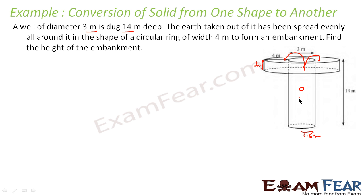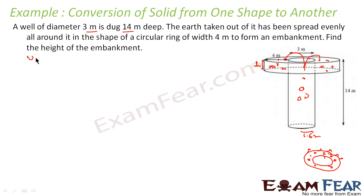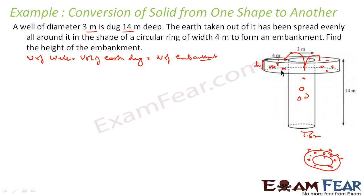We are taking the mud from the well and the mud is used to fill this surrounding area — the embankment. If you see the top view, it will be in this fashion: the surrounding ring area is where we are putting the mud, and this height will rise. We are asked to find the height of the embankment. Volume of well equals volume of earth dug out equals volume of embankment. The embankment is this surrounding ring area.